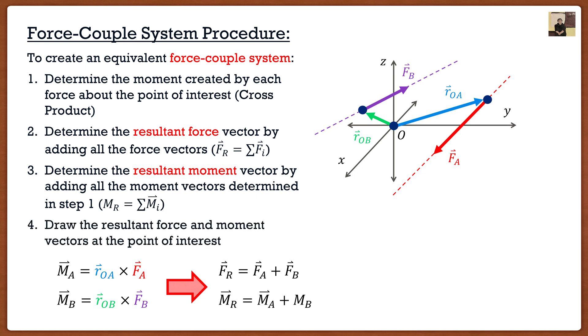And then finally, most professors would like you to draw what just happened. So we have our original situation above, and we should draw that. We went from that situation where we had two forces, to this situation where we now have resultant force acting at point O, and we have a resultant moment acting at point O. So this is what we did. We took two forces that did not act at point O, and we converted them into an equivalent force couple system that acts at point O.